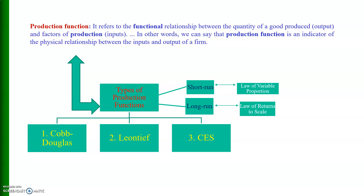If you look at this figure, there are three types of production function I'll discuss in detail. Number one: Cobb-Douglas production function. Number two: Leontief production function. And number three: Constant Elasticity of Substitution production function. Production function may also be explained with respect to short run and with respect to long run.